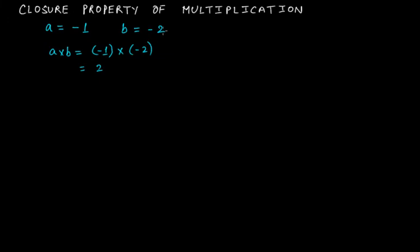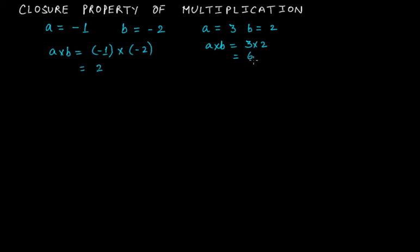Let's take one more example with two positives. Let a = 3 and b = 2. So a × b = 3 × 2 = 6. Is six an integer? Of course, six is an integer.